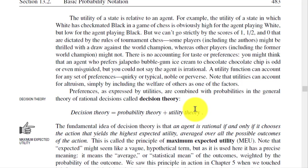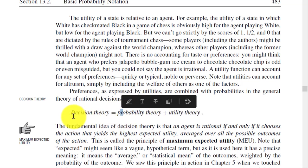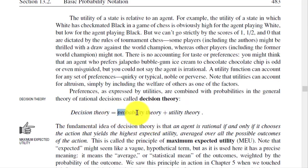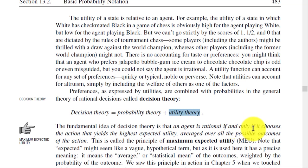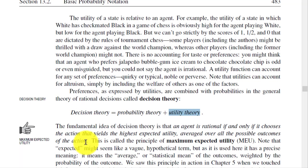Preferences expressed by utilities are combined with probabilities in a general theory of rational decisions called decision theory. Decision theory equals probability theory plus utility theory. The fundamental idea is that an agent is rational if and only if it chooses the action with the highest expected utility, averaged over all possible outcomes — this is called maximum expected utility (MEU).